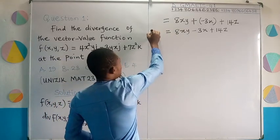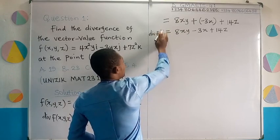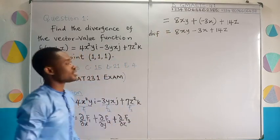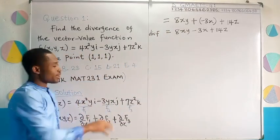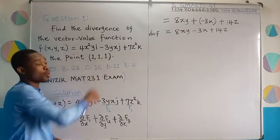This is the divergence of the vector value function f, which depends on x, y, and z. But come back to this question once again. We are asked to find this divergence at the point 1, 1, 1.